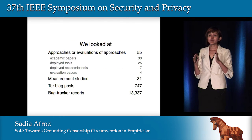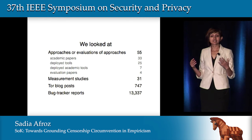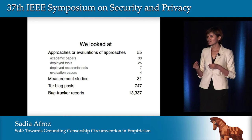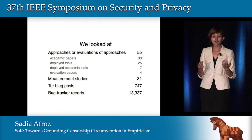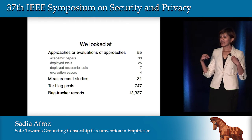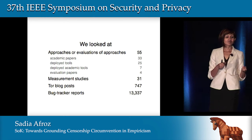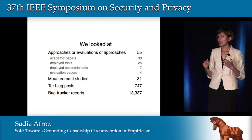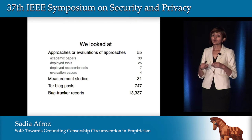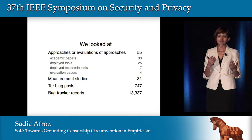Even this limited scope is a pretty large space. We studied 55 censorship circumvention papers — 33 of them are academic papers, and 25 are already deployed in the real world. We also looked at four papers that analyze and evaluate other circumvention systems. To understand how censors behave in the real world, we studied 31 censorship measurement papers and explored thousands of bug reports and blog posts from Tor.